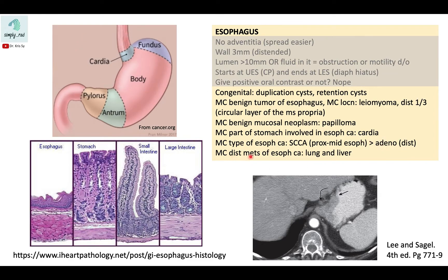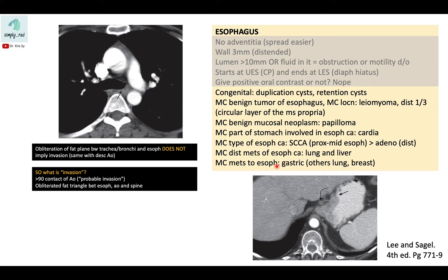The most common distant metastases of esophageal cancer are to the lung and liver. The most common metastasis to the esophagus comes from gastric carcinoma. Others include lung and breast primaries.